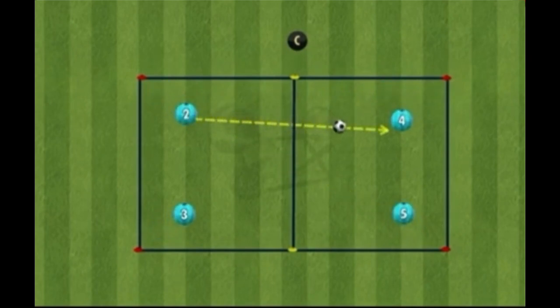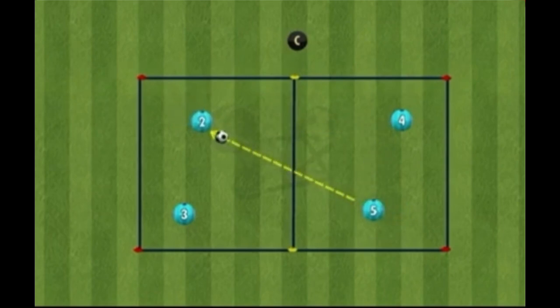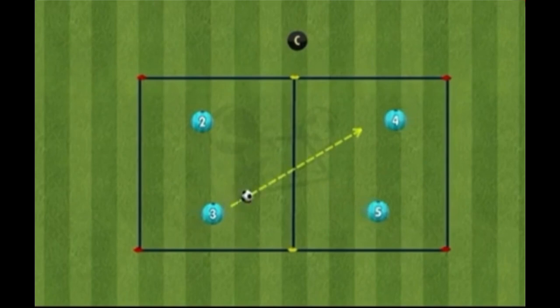If a player takes two touches or miscontrols the ball, then the other team is awarded a point. If a bad pass is played and the ball goes out of the area, then a point is awarded to the opposition. Players should ensure passes are crisp and powerful so as to test their opponent's first touch and control.